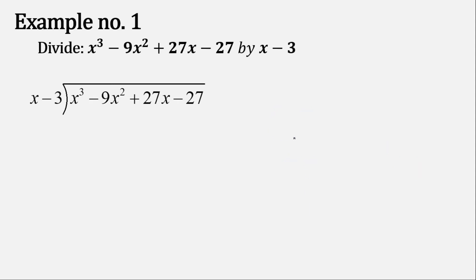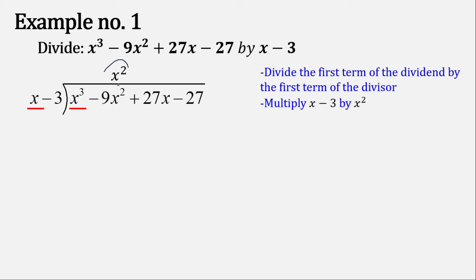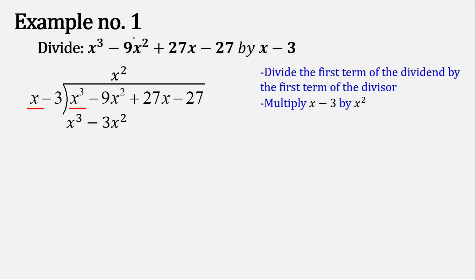Now let's proceed to the first step. Divide the first term of the dividend by the first term of the divisor. So 3x cubed divided by x is x squared. Put that at the top of the bar. Now let's multiply x squared by the whole divisor. We have x squared times x equals x cubed, and x squared times negative 3 equals negative 3x squared.